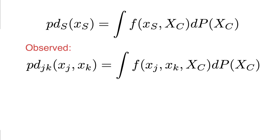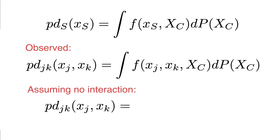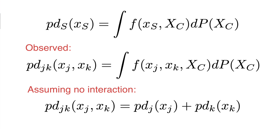If we assume that J and K do not interact, we can reformulate their joint PD as the sum of two individual PDs — one with just xj and another with just xk. We won't get into the proof for this, but let's try to gain intuition for why it's correct.